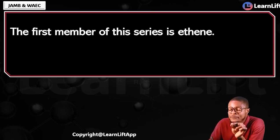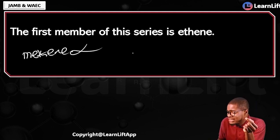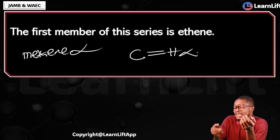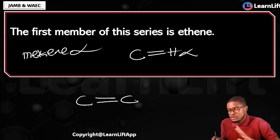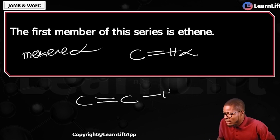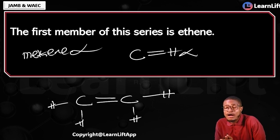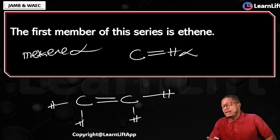The first member of your alkene series is called ethene. Some may think the first member is methene — no, there is nothing like methene. If we're talking about hydrocarbons, you cannot link carbon to a double bond to just hydrogen. The simplest member is your ethene — it is carbon double bond to carbon, and then hydrogen on each side. Double bond must link carbon to carbon. This is the simplest member of your alkene series.